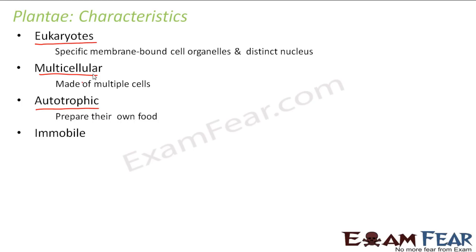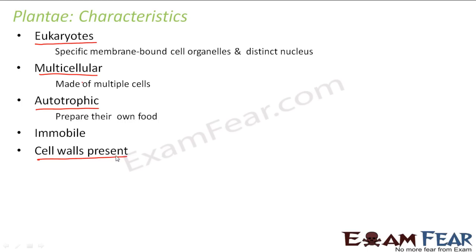Plants are immobile — you would have seen that plants are static and do not move from one place to another. Cell walls are also present in plants, just like in fungi. So these are some of the basic characteristics of all organisms belonging to kingdom Plantae.